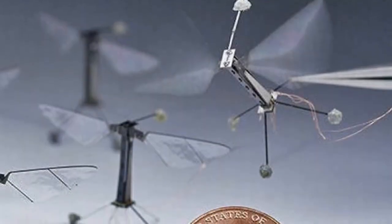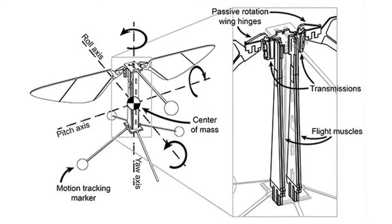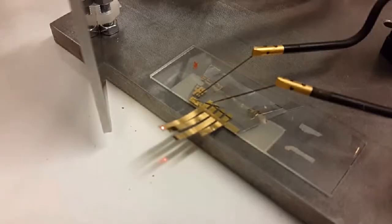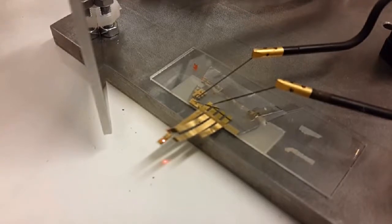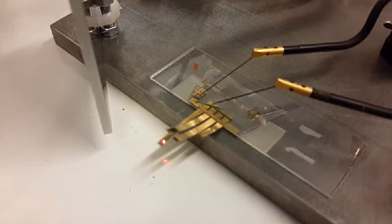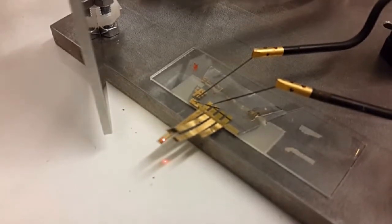The development of the RoboBees has allowed for great innovation. Building a sophisticated, autonomous machine the size of a penny presents many challenges, many of which require creating brand-new solutions. For example, motors are not an option at this scale, and so the robot's wings are moved using ceramic components called piezoelectric actuators. These pieces move when subjected to an electric field.